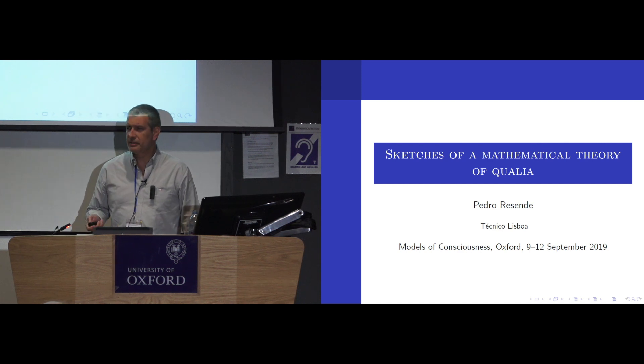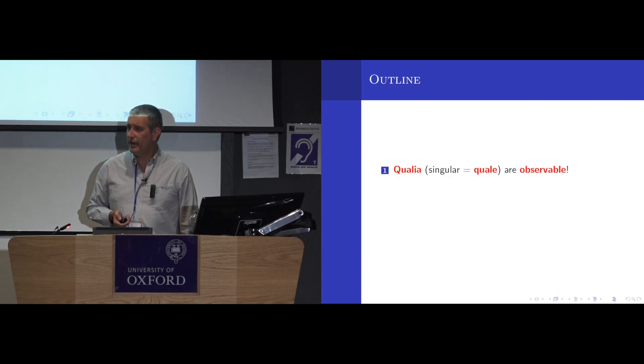I've been hearing lots of things about qualia, beginning with qualia don't exist, or they exist but they are physical, or they are not physical, they are emergent, they are not emergent. Whatever they are, qualia are by definition because they are our experience, they are observable.